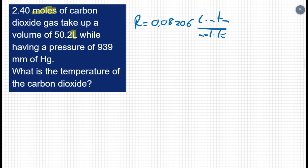But I have millimeters of mercury for my pressure. We need to be in atmospheres. So let's start there. Our pressure is 939 millimeters of mercury, so I'm going to want to get that into atmospheres. So 1 atmosphere is equivalent to 760 millimeters of mercury.